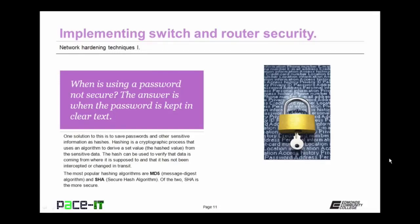Let's conclude with talking about implementing switch and router security. When is using a password not secure? The answer is when the password is kept in clear text. One solution is to save passwords and other sensitive information as hashes. Hashing is a cryptographic process that uses an algorithm to derive a set value — also known as the hashed value — from the sensitive data. The hash can be used to verify that data is coming from where it is supposed to and that it has not been intercepted or changed in transit. The most popular hashing algorithms are MD5 and SHA. Of the two, SHA is the more secure.